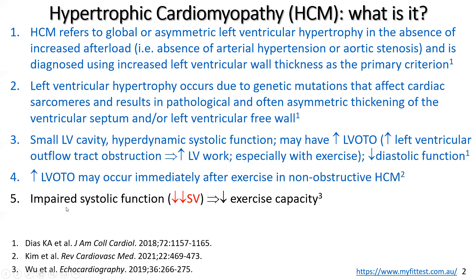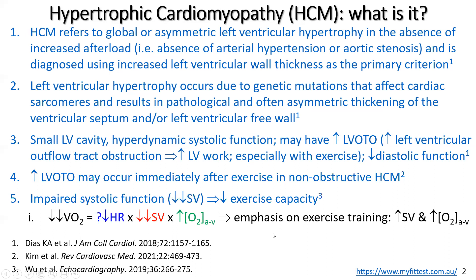Coming to some of the physiology: together with impaired diastolic function, the left ventricular outflow tract problems and hypertrophy impair systolic function, manifested as a drop in stroke volume both at rest and during exercise. So a lot of these patients present as heart failure, which is really what they are. This will definitely impair exercise capacity. VO2 is the product of heart rate, stroke volume, and oxygen extraction at the tissues. Heart rate doesn't play much of a role in hypertrophic cardiomyopathy, which underlines the folly of using heart rates to prescribe exercise for these patients and so many cardiac patients.